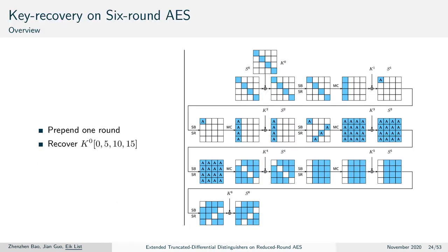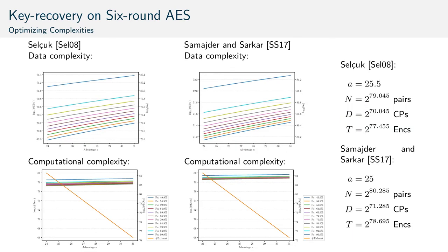While our distinguishers are somewhat inferior to those by Grassi and Rechberger, they have one significant advantage. Since they start from a single active byte, one can easily prepend a round. So we could derive a six-round key recovery from our five-round distinguisher by guessing four bytes of a diagonal of the initial round key. More details can be found in the paper.